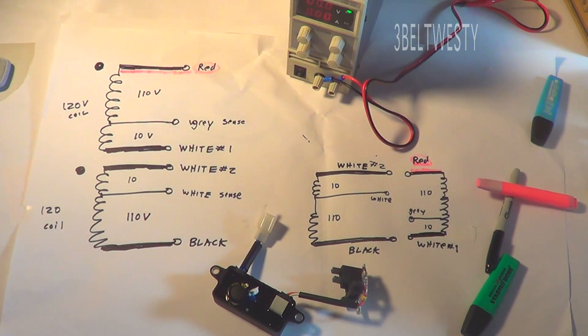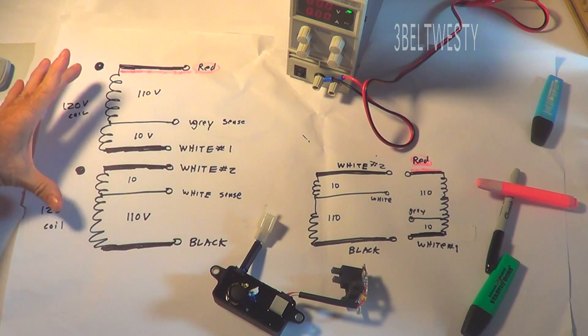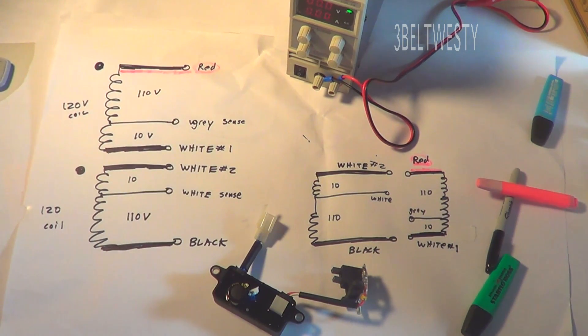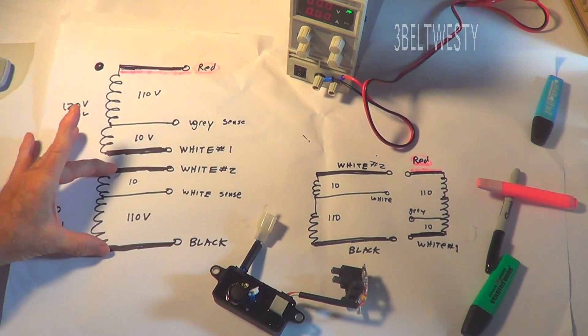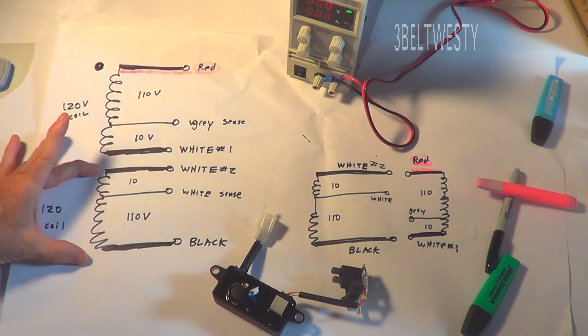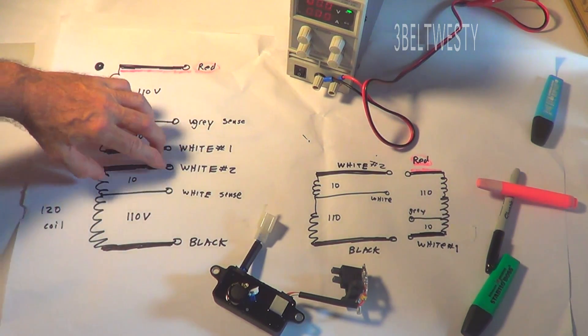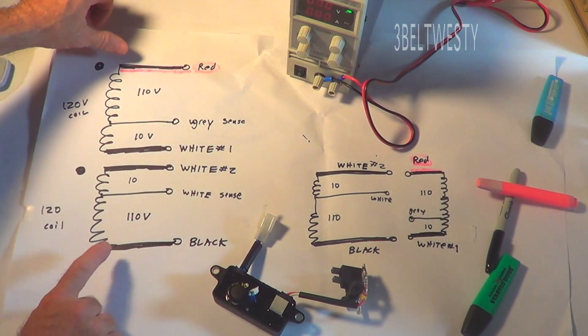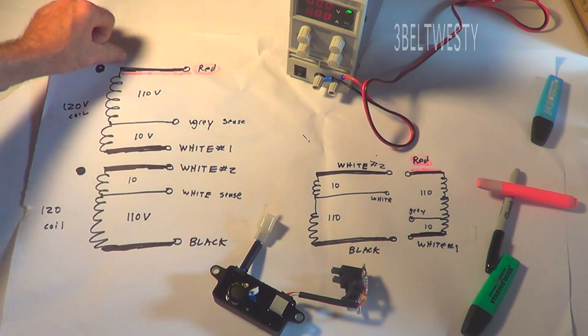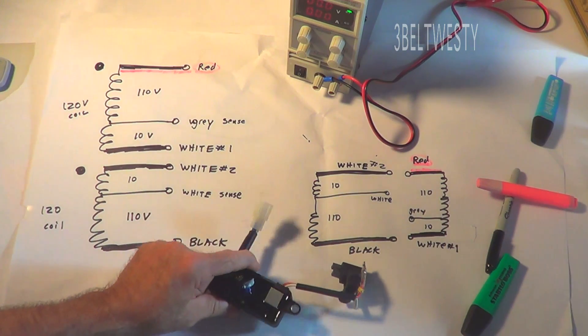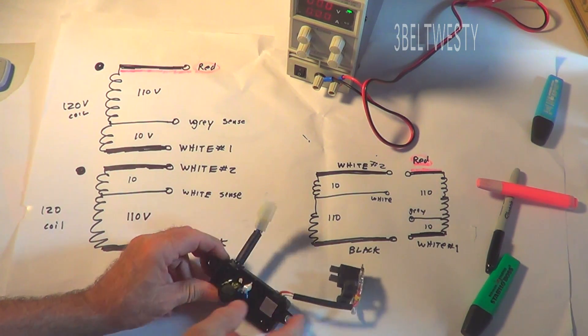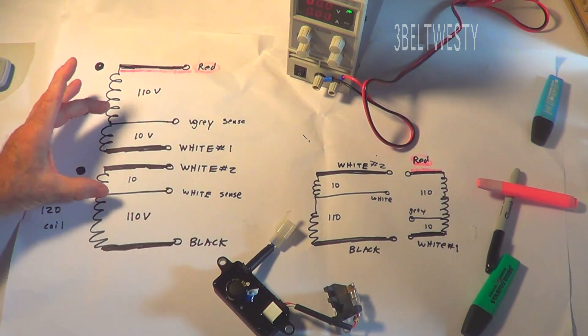Okay, this is for the Harbor Freight 3200 watt generator stock condition. You've got 230 volts output across here. Here's the 110 volt coil, 120 volt coil, here's the other 120 volt coil. They connect the two whites together, got 240 volts across that.